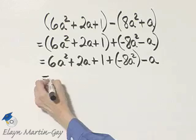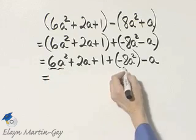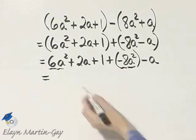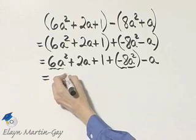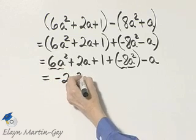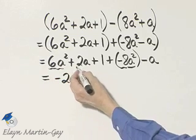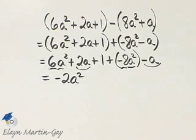Now we just look for like terms. These two terms are like terms, and 6 minus 8, that's negative 2a squared. Then I'll have 2a minus a.